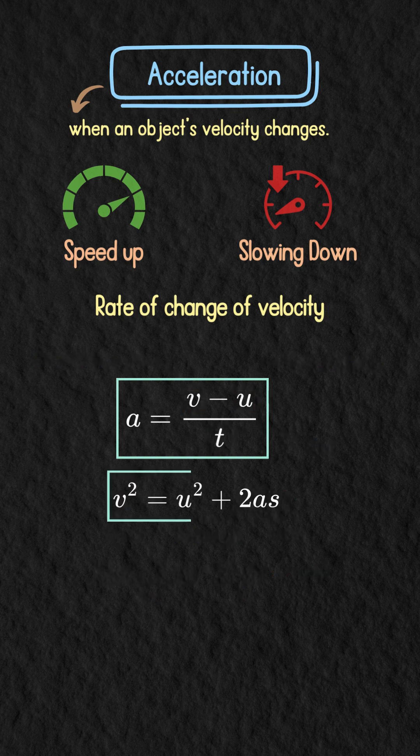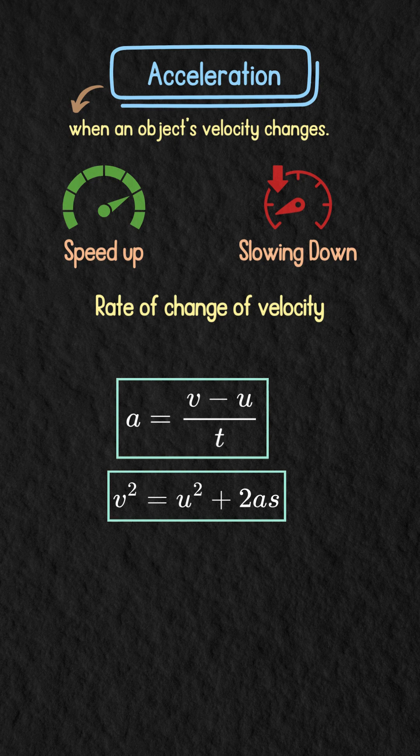The second equation is v squared equals u squared plus two times acceleration into distance.